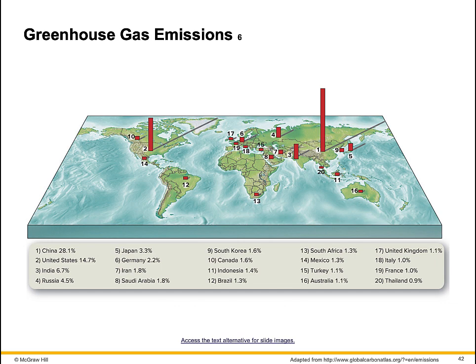Data for the 20 nations with the greatest emissions in 2014 are listed. Emissions of carbon dioxide vary hugely between places due to differences in lifestyles and ways of producing energy. These data will change annually — check online to see recent statistics and discover the most significant changes. How do you think this map will change and look 50 years from now?